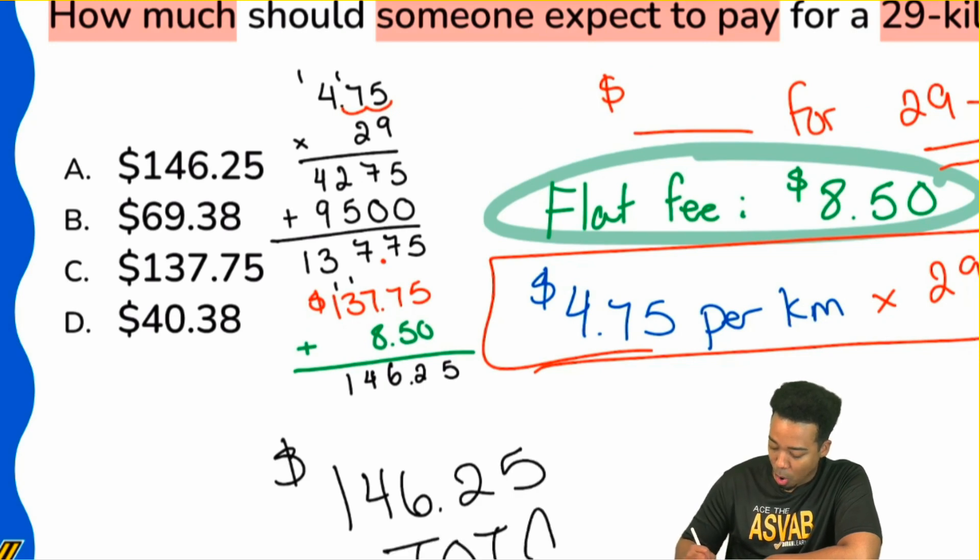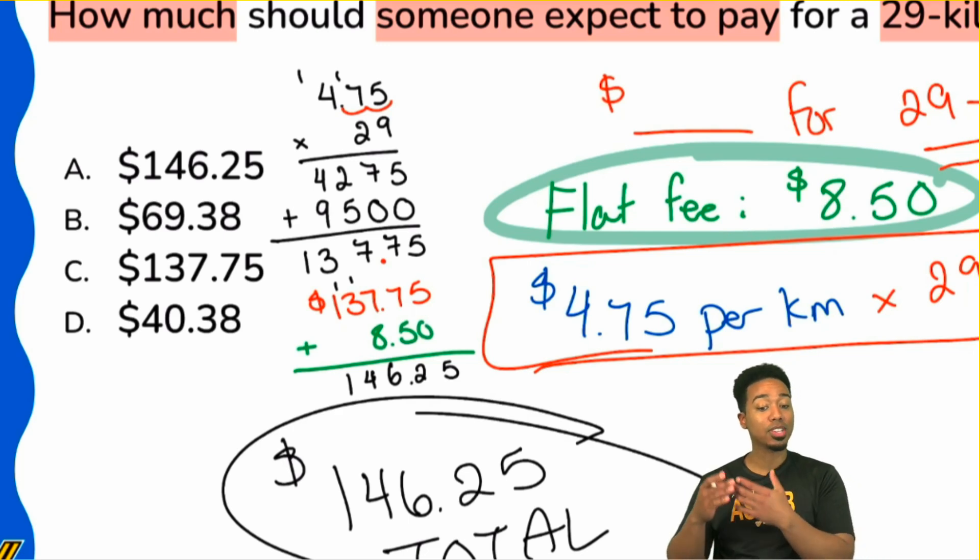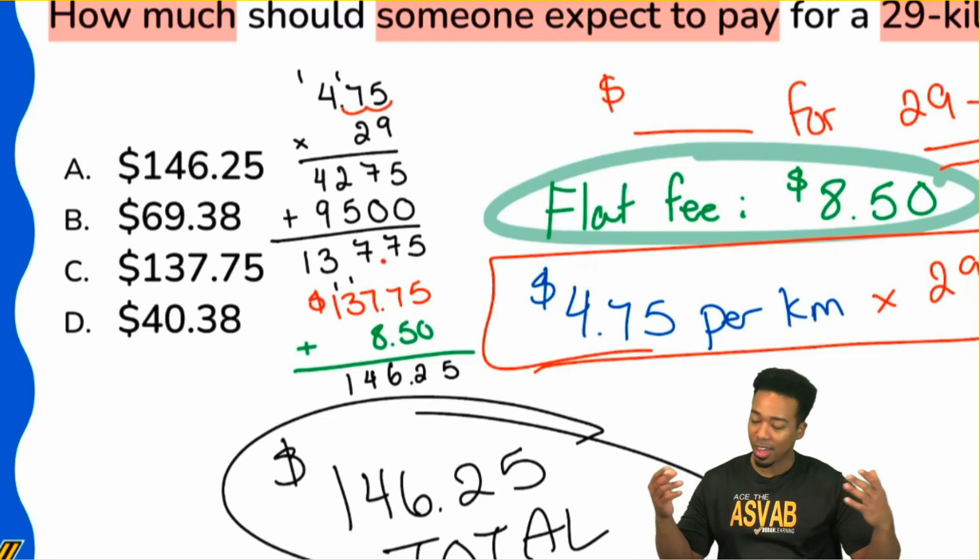That is the total that you're going to be paying. You pay $137.75 for the trip after you get into the cab. But there was a flat fee, the $8.50 that you needed to account for. And that's why it's so important to be able to read through the question, understanding this is my goal, these are the pieces of information that we have. And we're good.